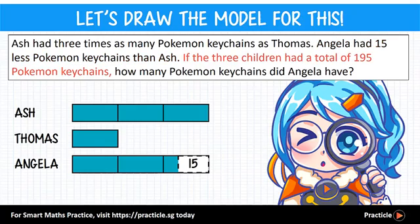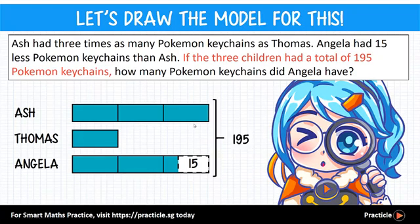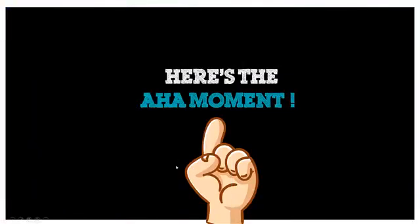Finally, we are given that the three children had a total of 195 keychains. This means that all the units we see here add up to give us a total of 195. We are done drawing the model — it contains the same amount of information as the question, and it's much easier to look at. Now let's see how to use it to solve this math problem.